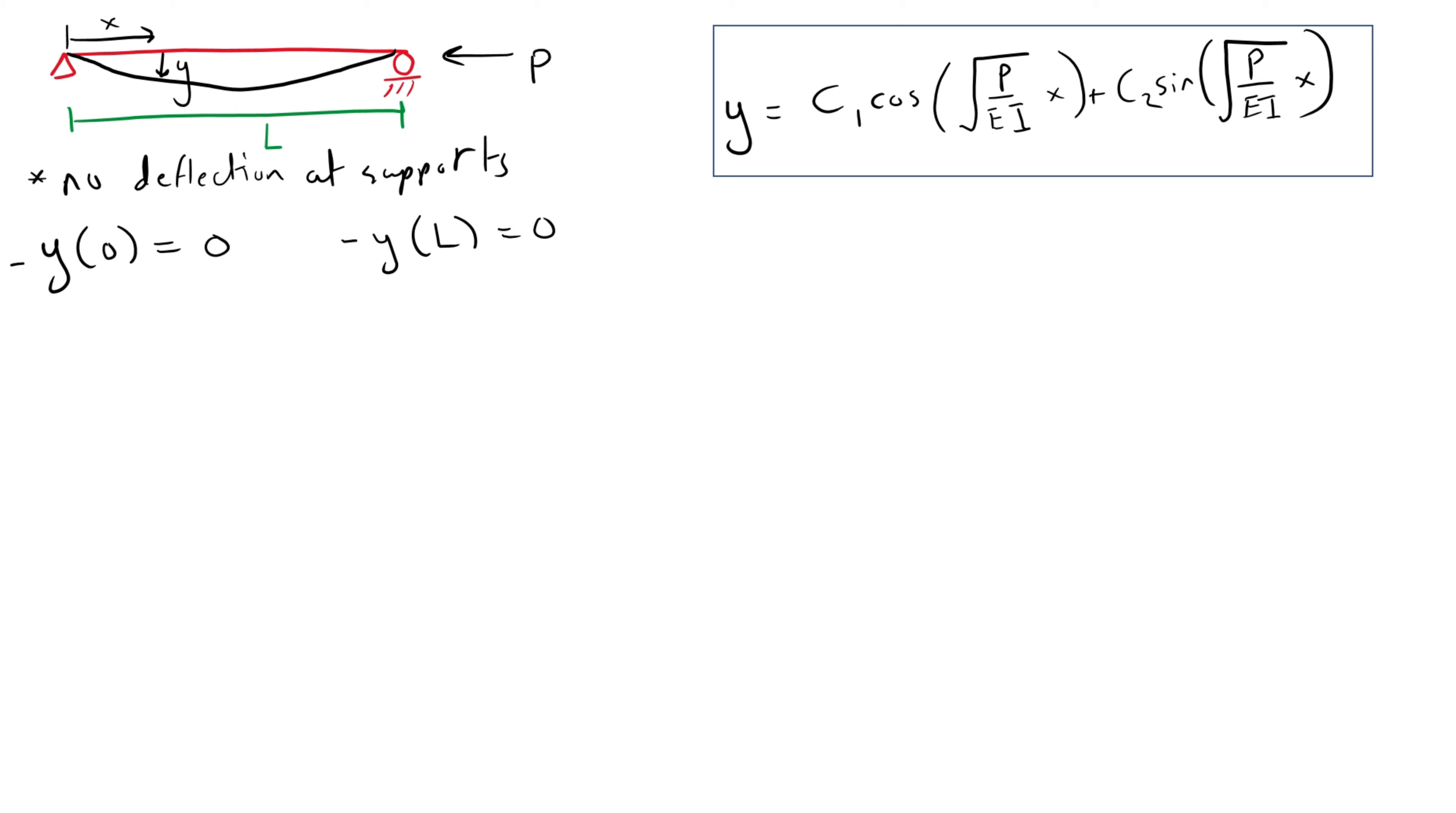Now let us apply the boundary conditions for the specific case of a simply supported beam. We know that there is no vertical displacement at the supports. So y at x equals 0 is 0. By substituting x with 0, we see that the sine term disappears, and the cosine of 0 is 1, so C1 equals 0.